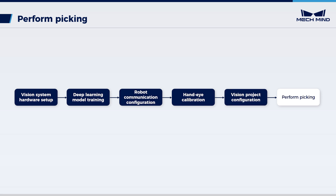In this video, with the vision result, we can build a path planning project in MechViz, and then configure the pick-and-place program for the robot to achieve picking.